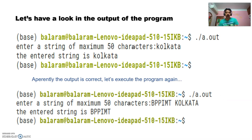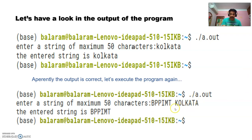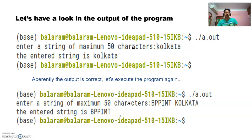Moving to the output of the program — we are taking a string of maximum 50 characters. It's entered as 'Kolkata' and then the entered string 'Kolkata' is printed. Now run the program again and give input as 'BPPIMT Kolkata' with a blank space. Here what we get is 'entered string is BPPIMT' — the word 'Kolkata' is missing. So we need some special methodology to take an input string with blank spaces.